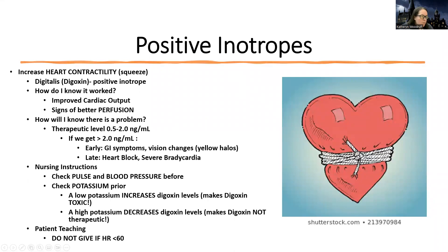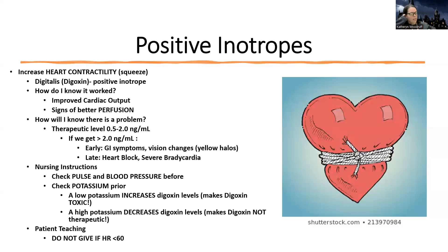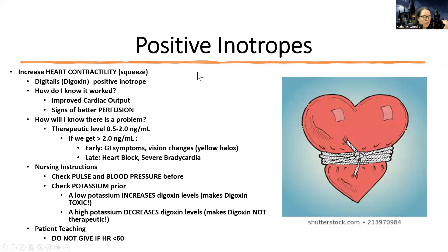So positive inotropes — this is the one medication we need to discuss specifically. Let's talk about digoxin. Like I said, it's not used as often as we might make it seem, but there's a good handful of patients who are still going to be on it. We do use digoxin — I've given it multiple times in the last year. So how do we know digoxin has worked? It's a positive inotrope, so it's going to help with my heart squeeze. It worked if I have better cardiac output, if I'm showing signs of better perfusion — especially kidney function and things like that.